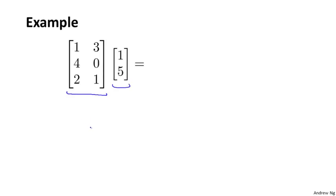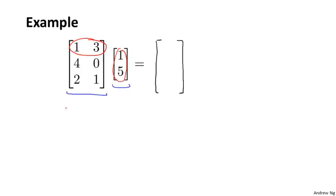What's the result? Let me just work through this example and then we will step back and look at just what the steps were. It turns out the result of this multiplication process is going to be itself a vector. To get the first element of this vector, I'm going to take these two numbers and multiply them with the first row of the matrix and add up the corresponding numbers. I'm going to take 1 multiplied by 1, and take 3 and multiply by 5. That's 1 plus 15, so that gives me 16.